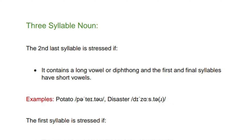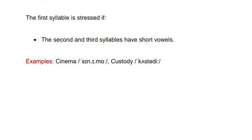Three-syllable nouns: the second-last syllable is stressed if it contains a long vowel or diphthong and the first and final syllables have short vowels — examples: 'potato', 'disaster'. The first syllable is stressed if the second and third syllables have short vowels — examples: 'cinema', 'custody'. I hope you've understood this lecture. If you have any queries, let me know in the comments below, and do share it with your friends.